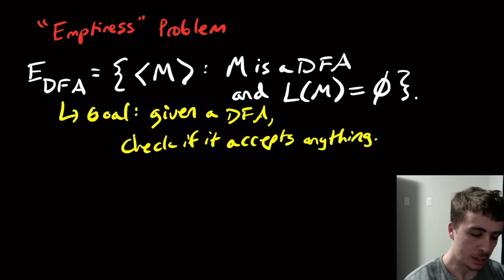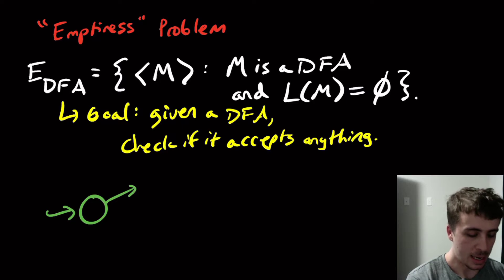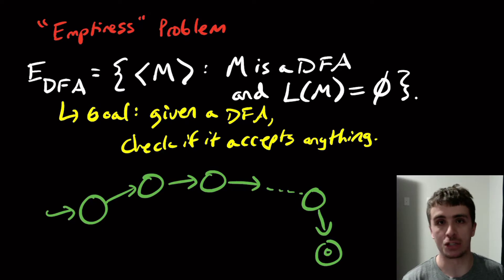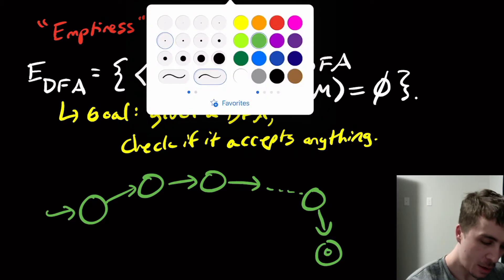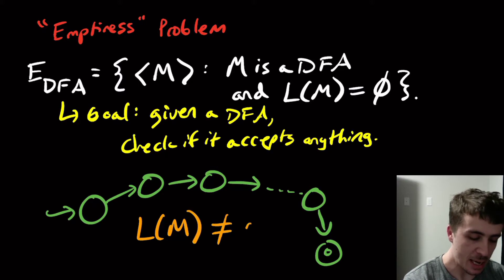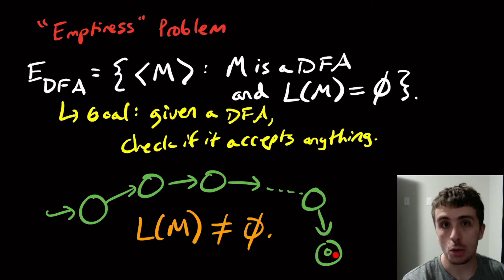So how do we actually do this? Well, obviously, if the start state is right here, and if there's a sequence of transitions, these could be repeating states at some point, but let's say that there's some way to go from the start state that leads to a final state somewhere. Then what we can say here is that the language of this machine is not empty, because there's some string, I don't know what it is, but it leads to a final state somewhere.